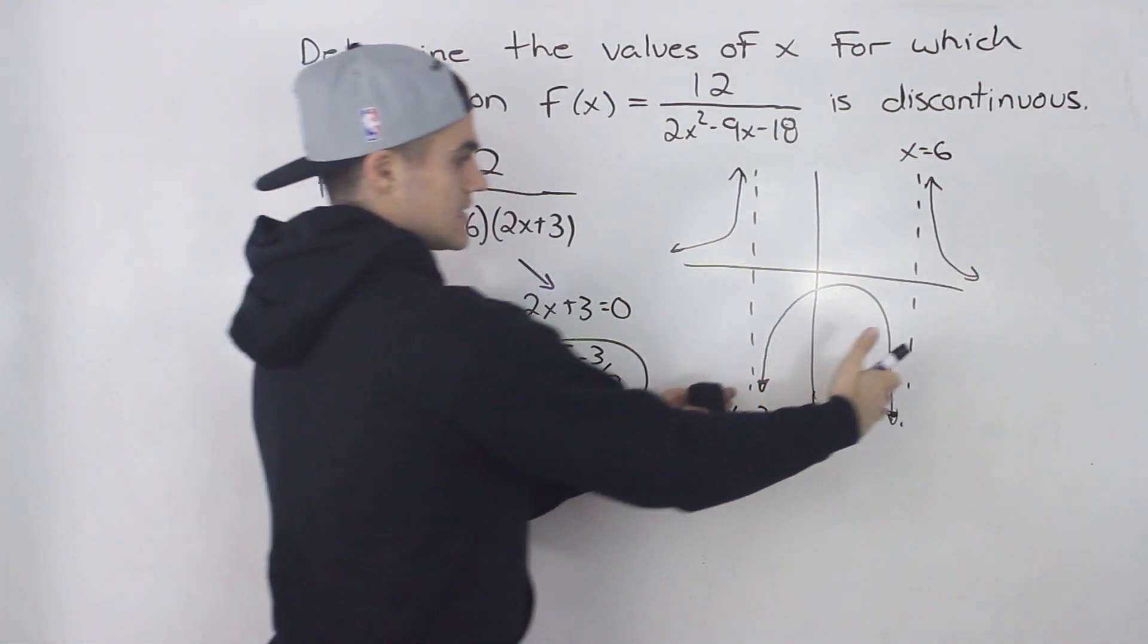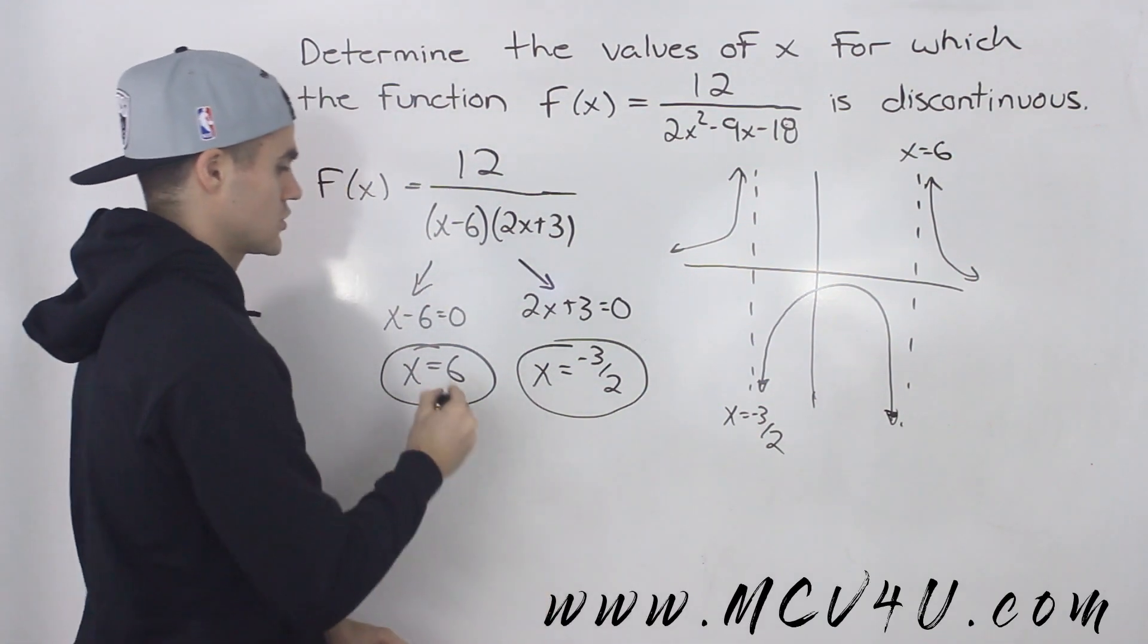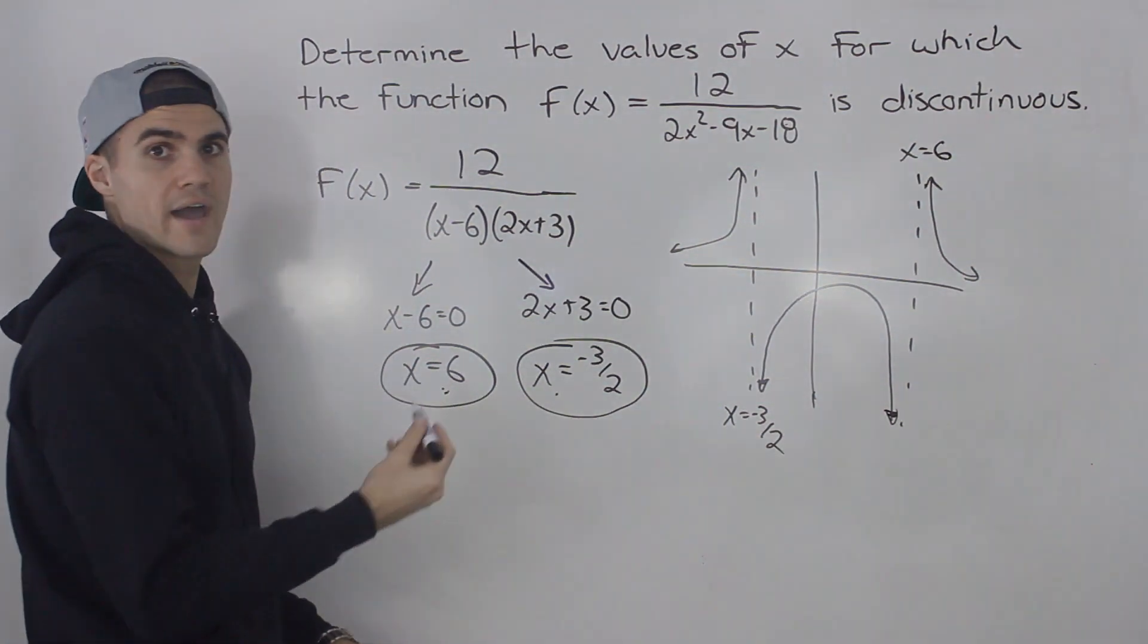but the graph looks something like that. So notice it's discontinuous at those two vertical asymptotes. So the answer to this question is these two x values.